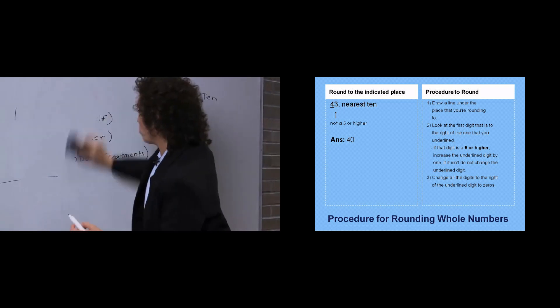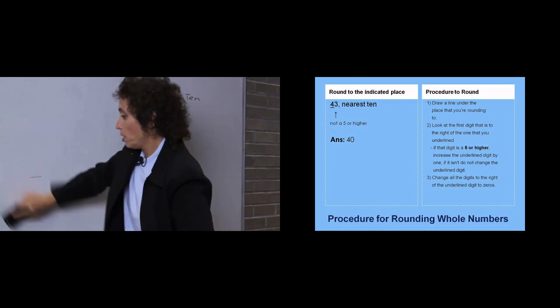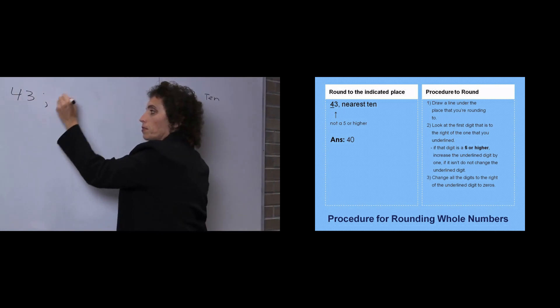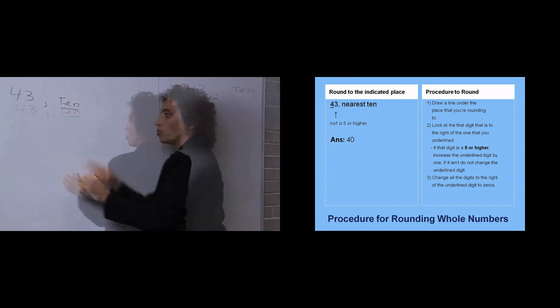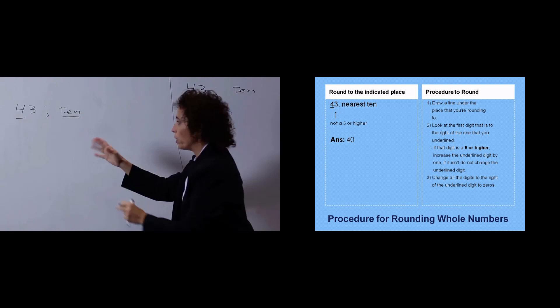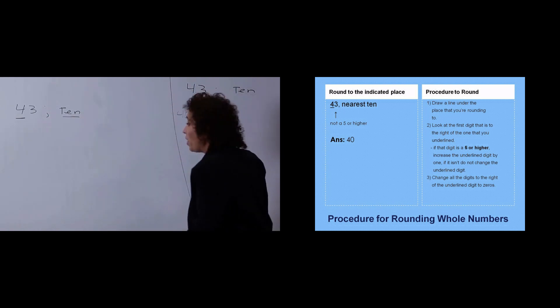I'm going to start with this number 43, and we want to round it to the nearest 10. The first thing we're going to do is understand that we're rounding to the nearest 10. So I'm going to underline the spot I want to round to, the place I want to round to. The 4 is in the tens place.